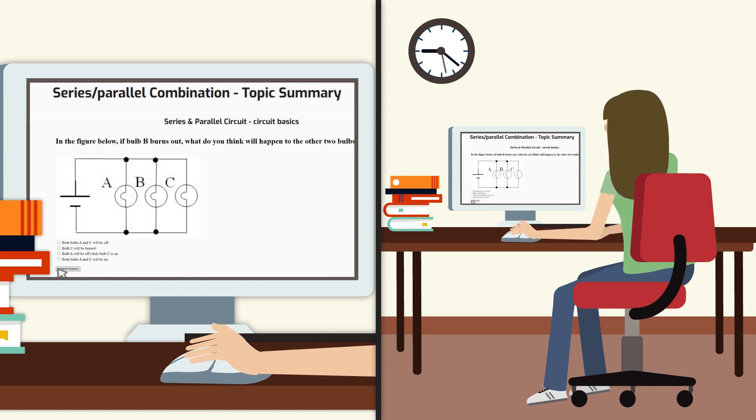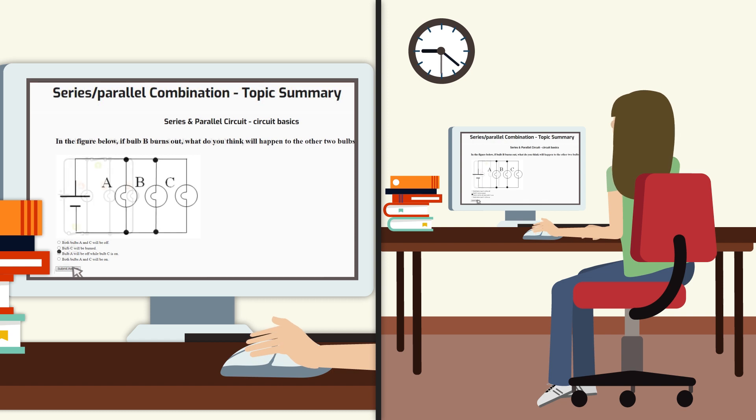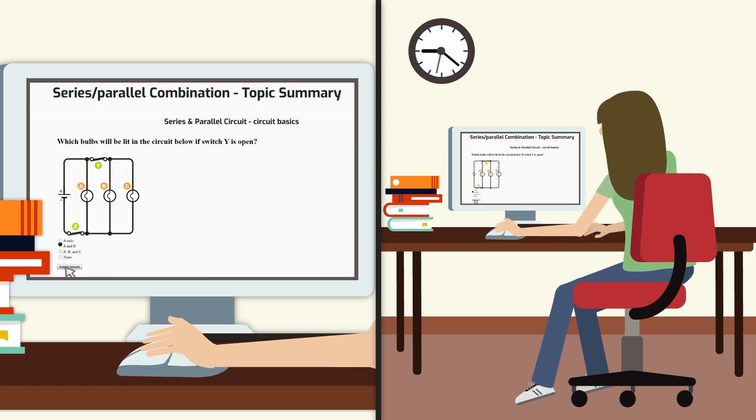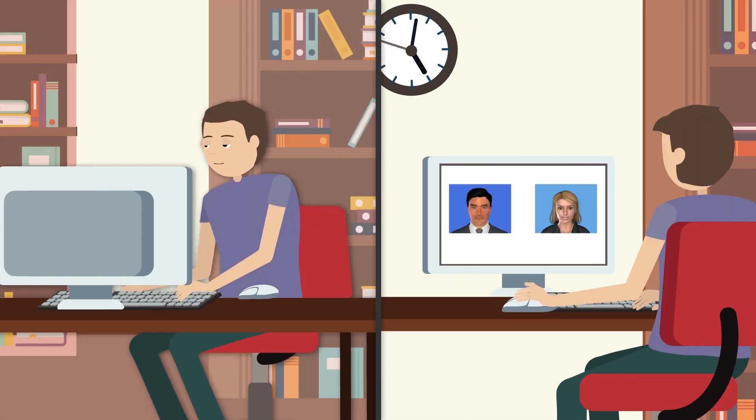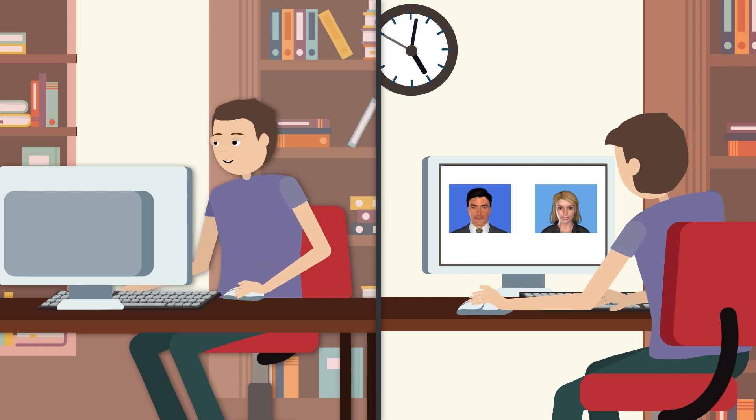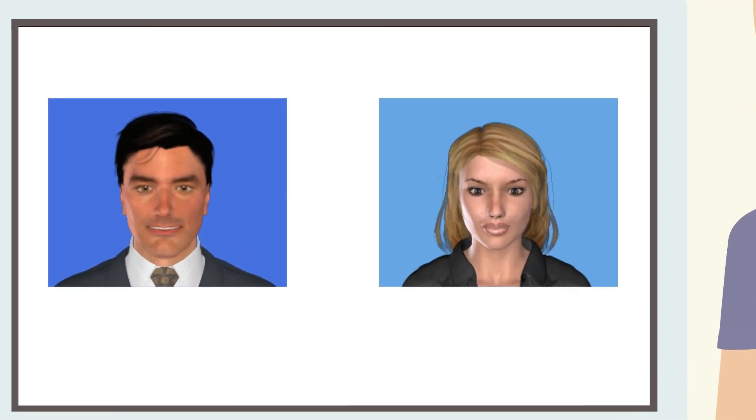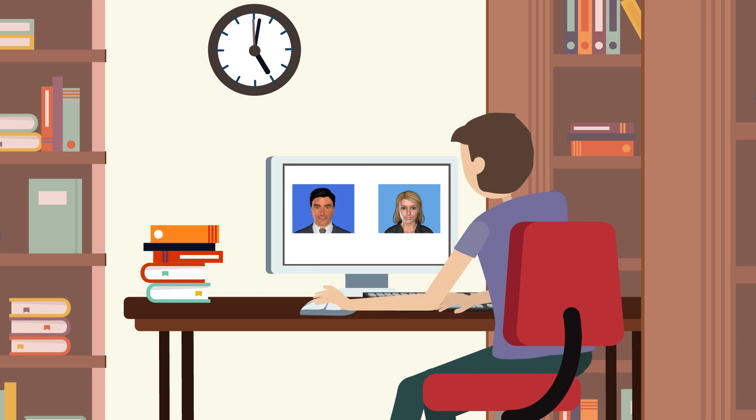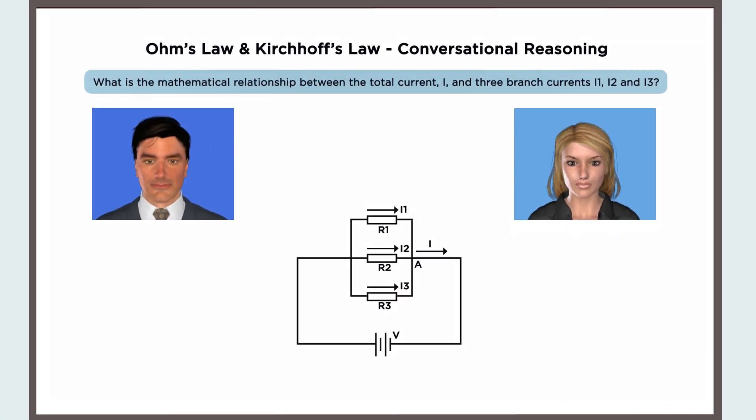These resources help learners review familiar concepts using an instructional framework. A virtual tutor agent and a peer agent allow for complex interactions with the learner. They address the student by name and ask questions to ensure understanding. Here is an example of a conversational reasoning problem.